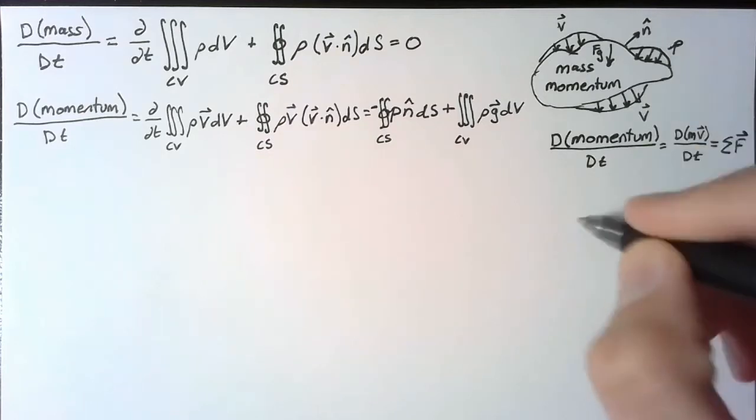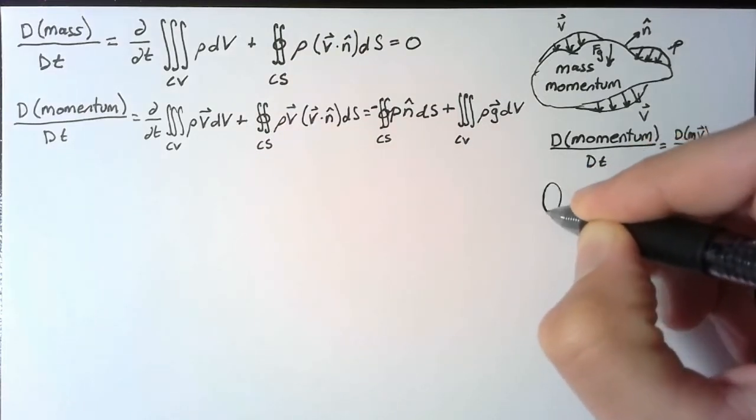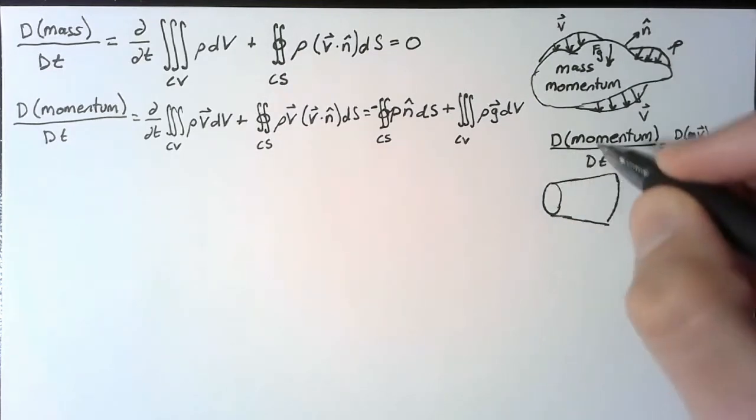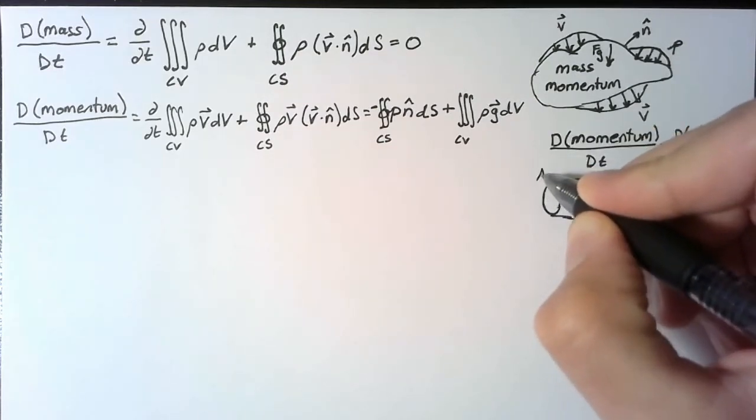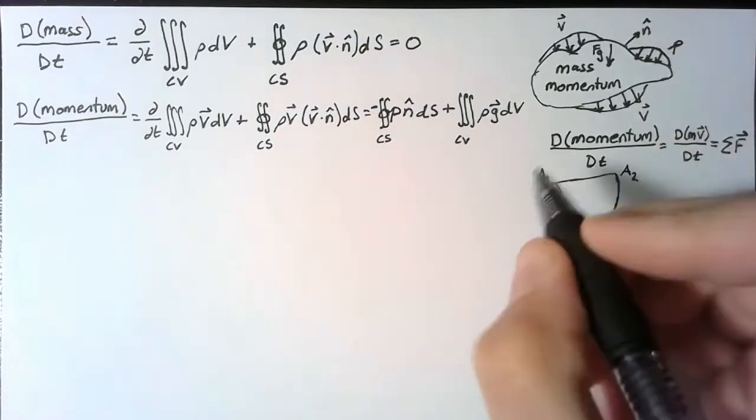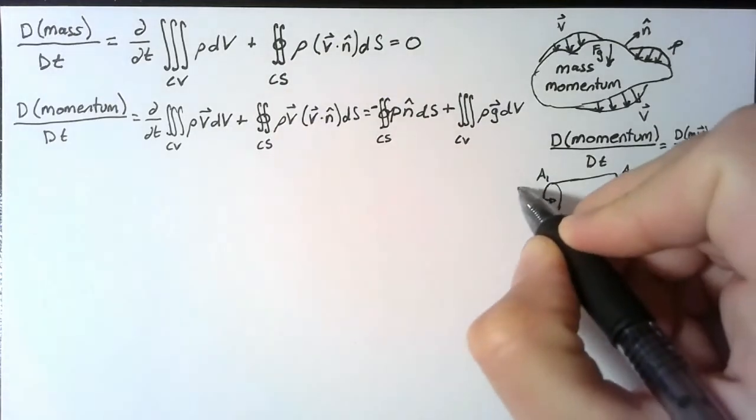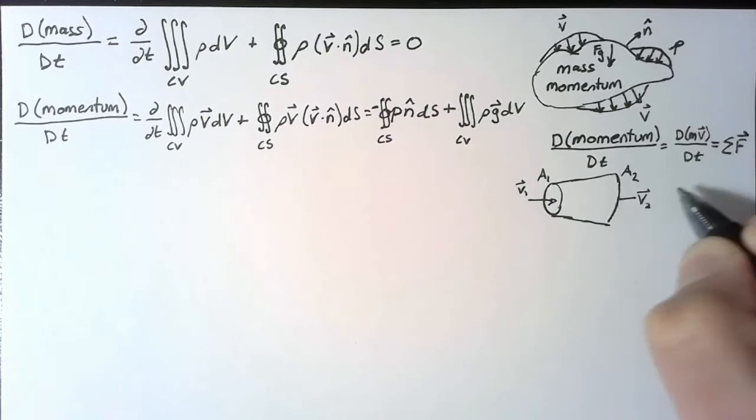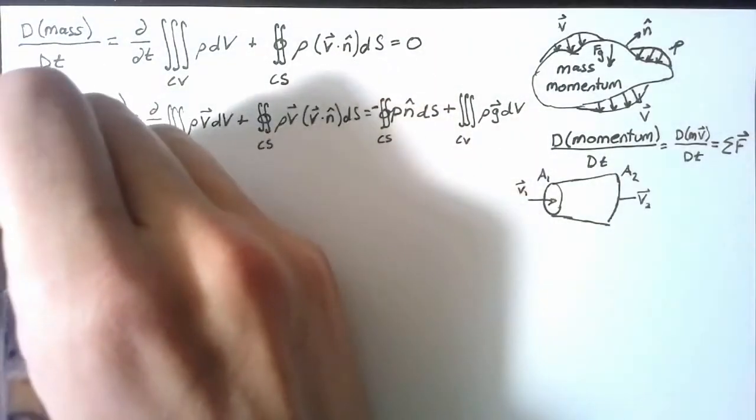Let's actually apply this to a problem. We are going to look at a diffuser. A diffuser is a piece of pipe that has some change in area as we move along. So at one point it's going to have some area a1, and then later it will have some area a2. The end result of this is that we have some velocity coming in and that ends up slowing down as we go through the diffuser.